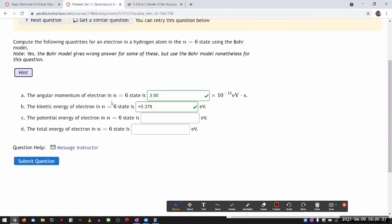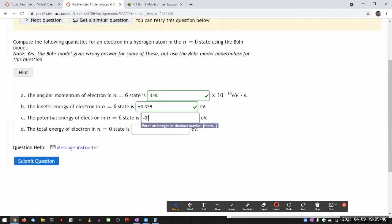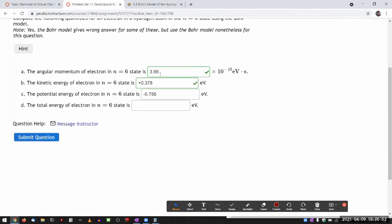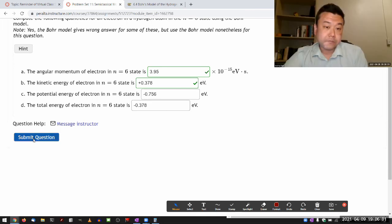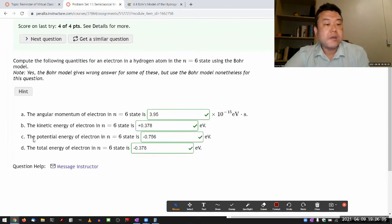Having answered part B, I can do C just in my head. It's going to be minus 0.756. And the total energy will be just minus 0.378. So the answers to B, C, and D are all going to be completely correct in the fully quantum mechanical version.